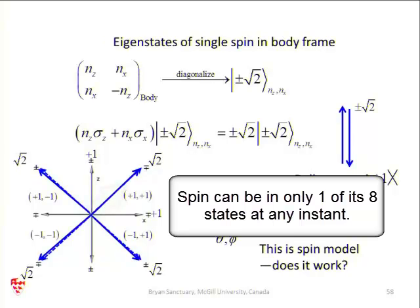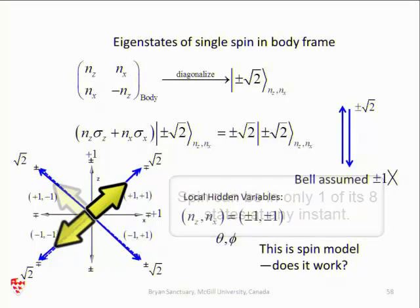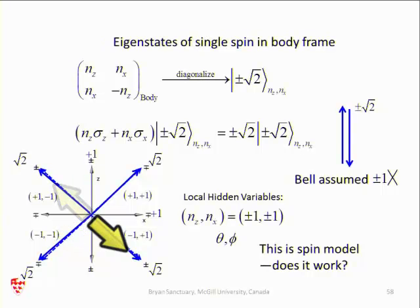It can be plus, or it can be minus, or it can be on this direction, or minus. But it cannot be in a superposition. It can be in one at any instant, because it's a pure state of a single particle, and it can only be in this state.